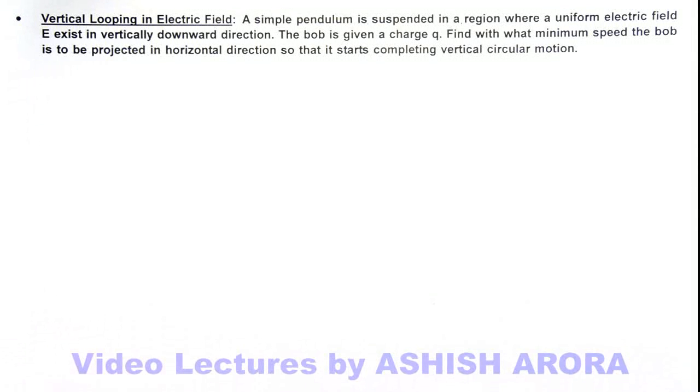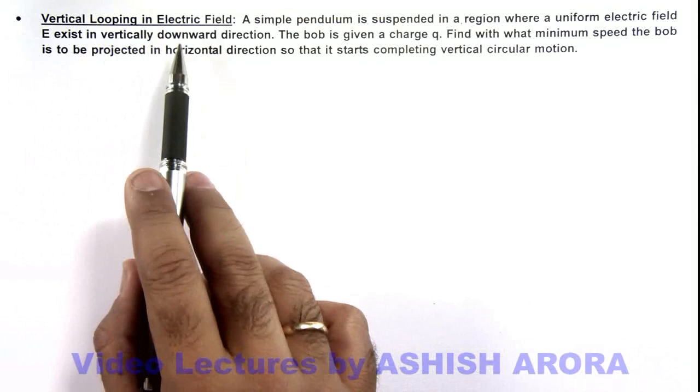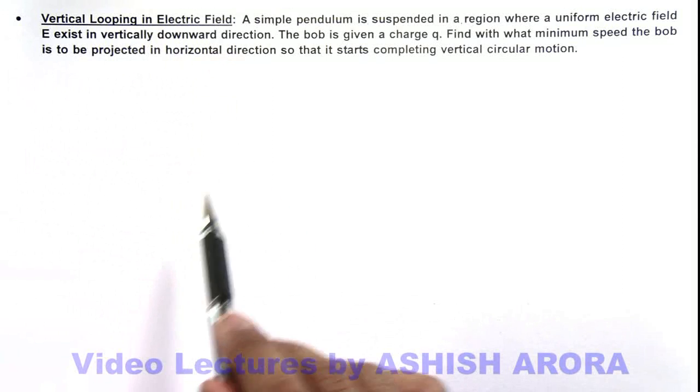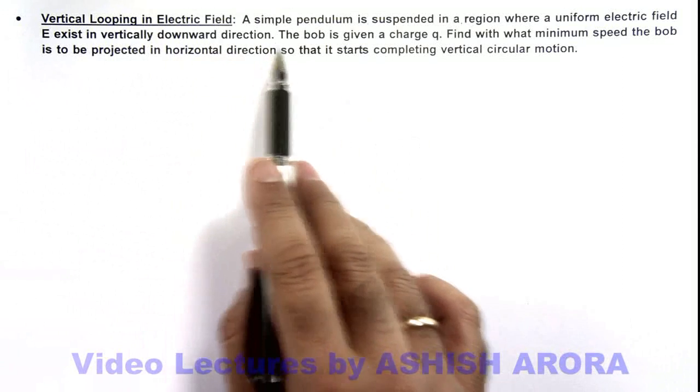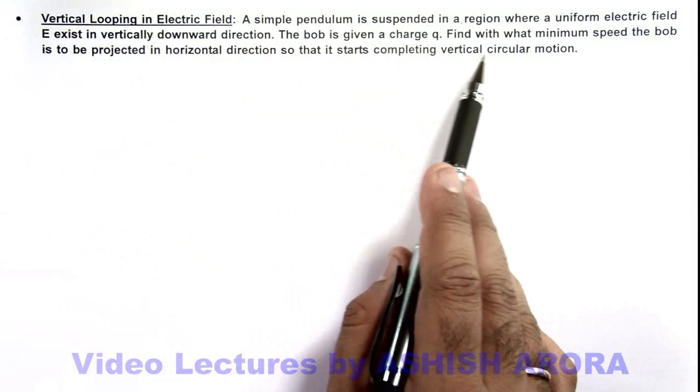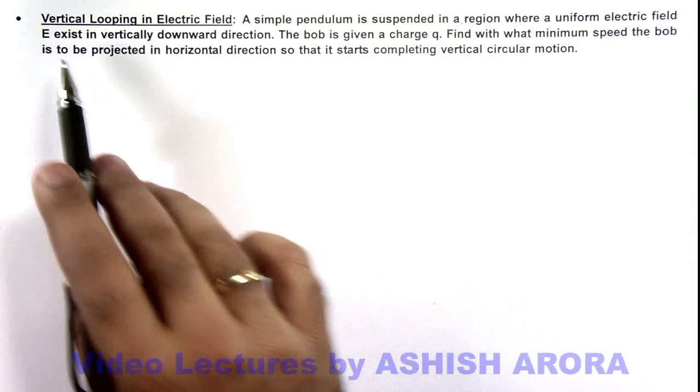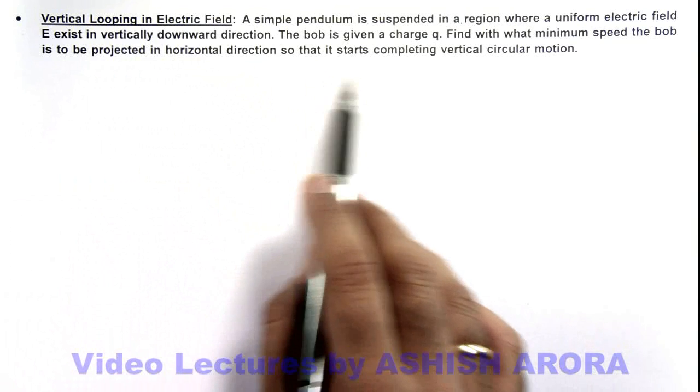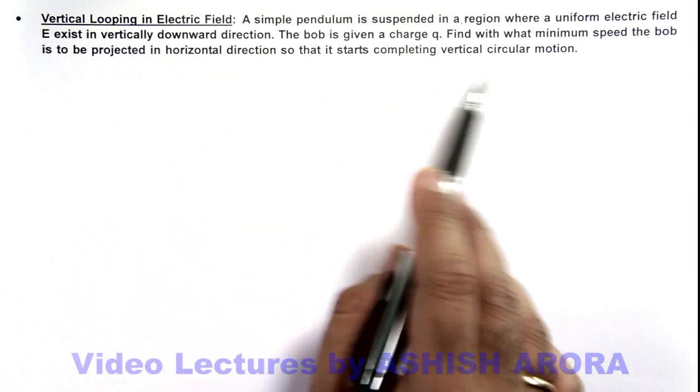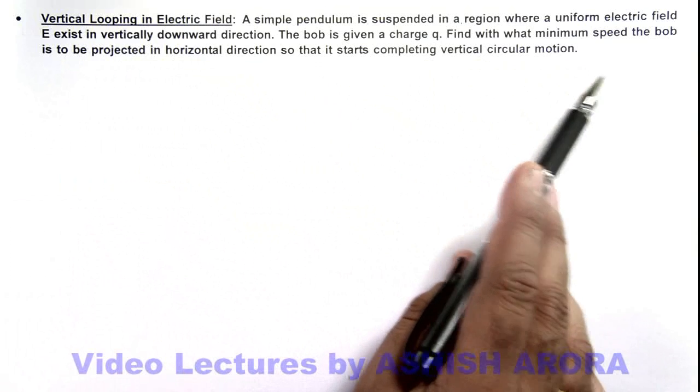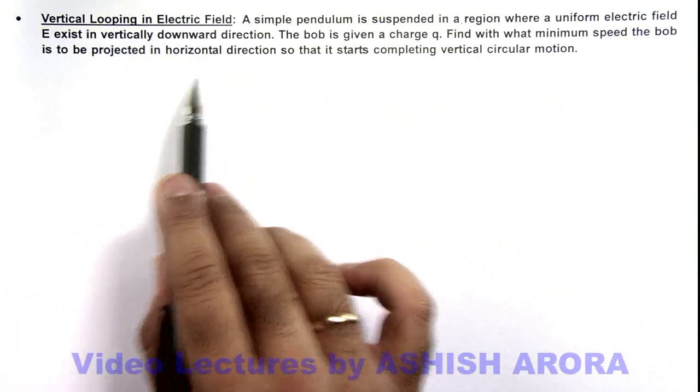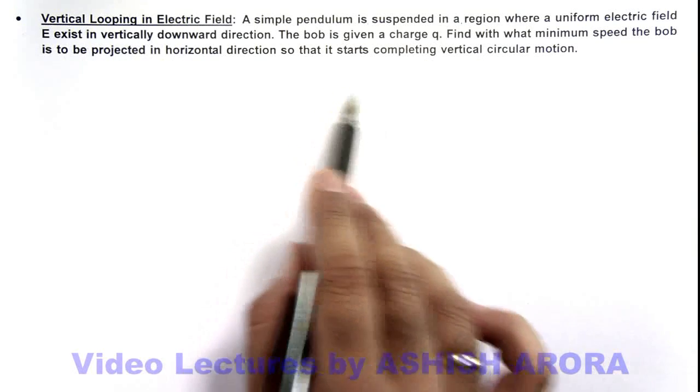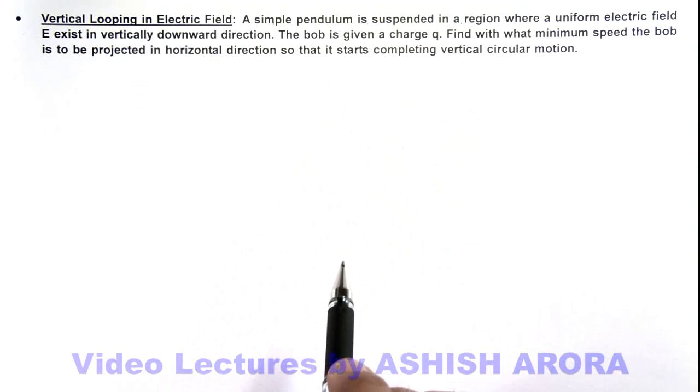In this illustration we'll study vertical looping in electric field. Here, it is given that a simple pendulum is suspended in a region where a uniform electric field E exists in vertically downward direction, and the bob is given a charge q. We are required to find with what minimum speed the bob is to be projected in horizontal direction so that it starts completing vertical circular motion.